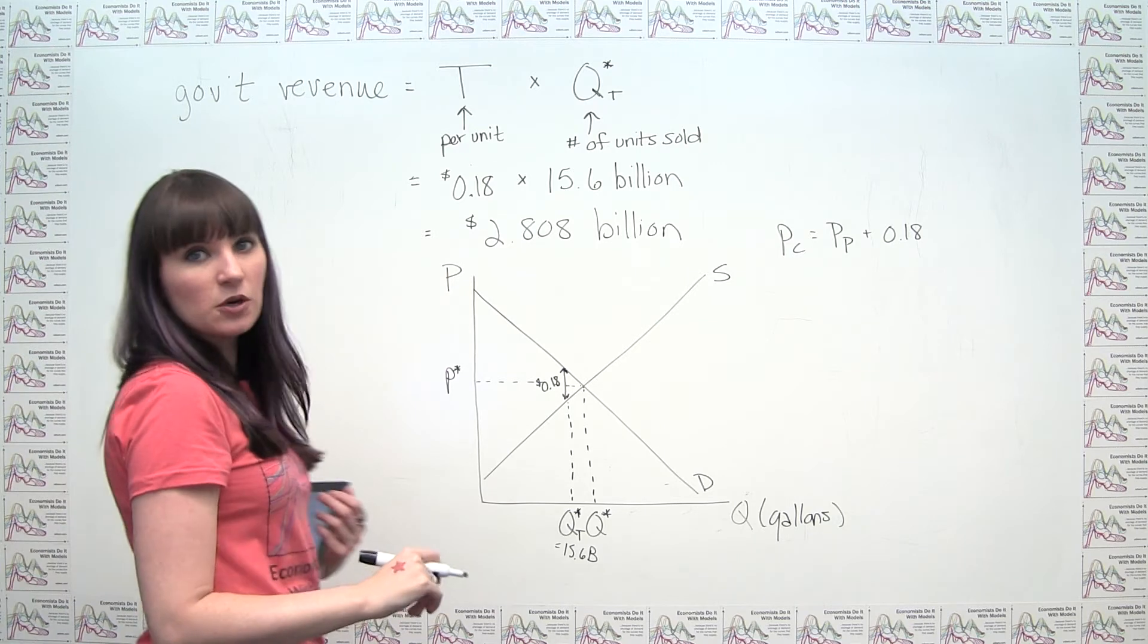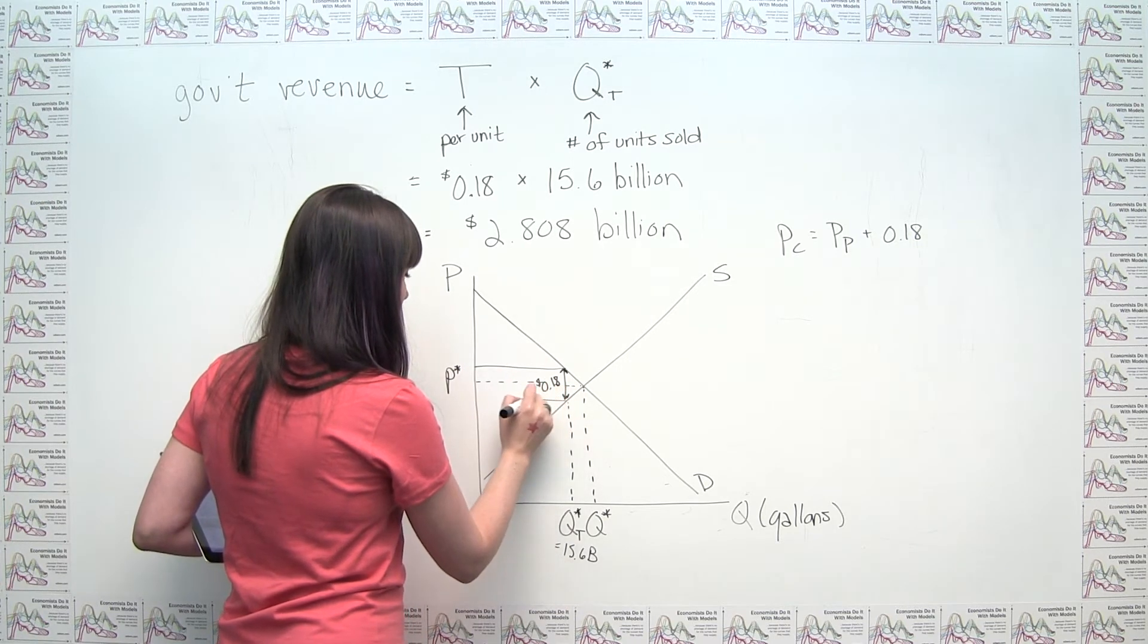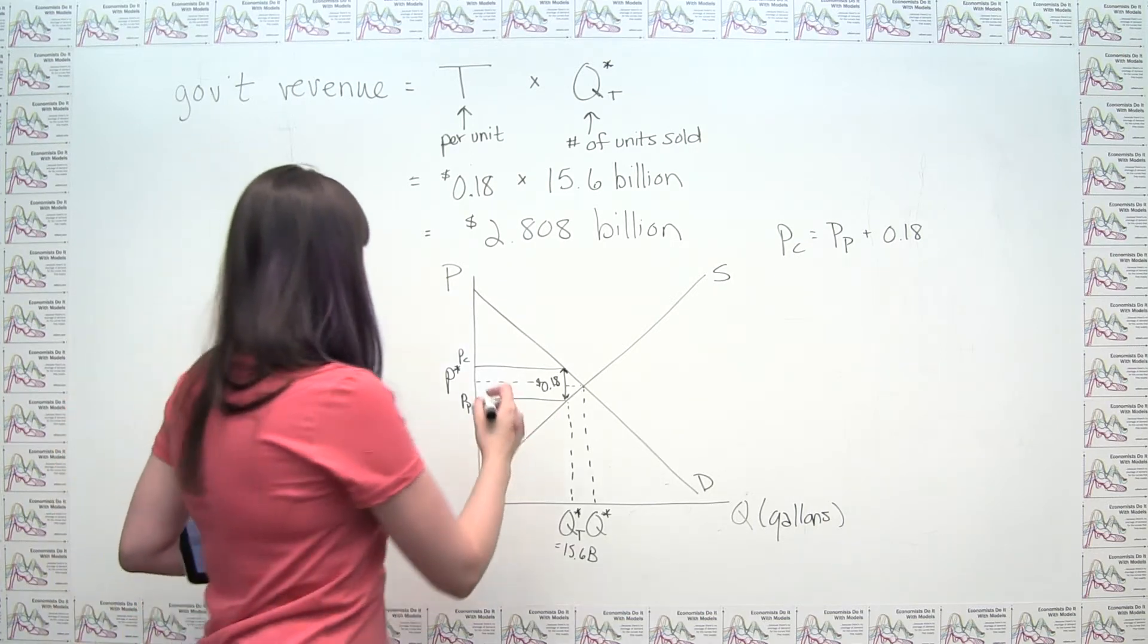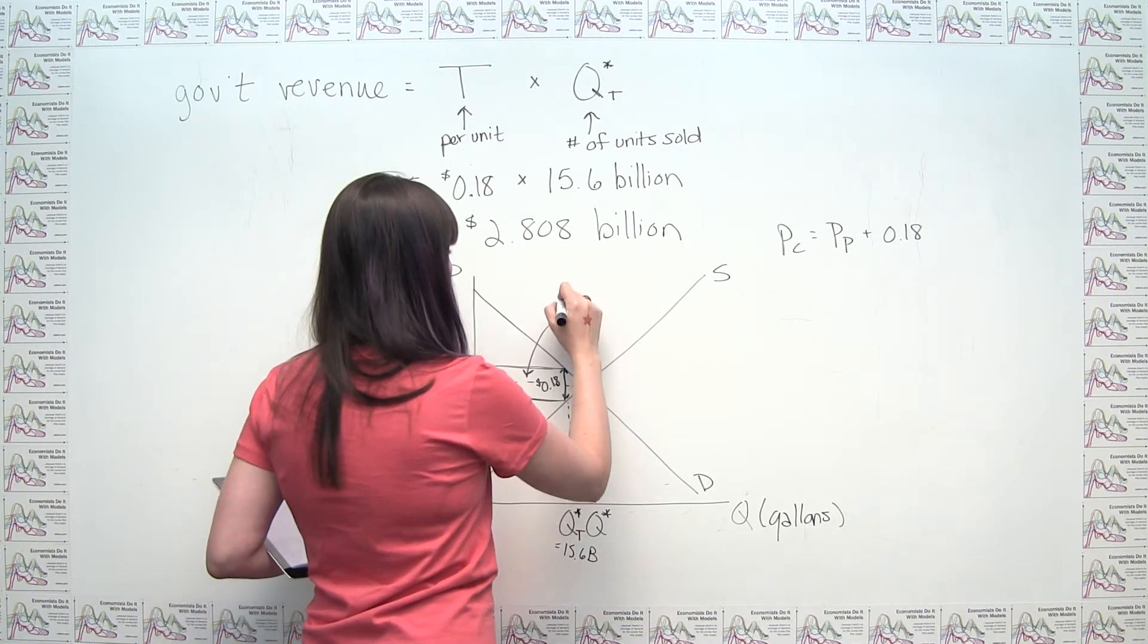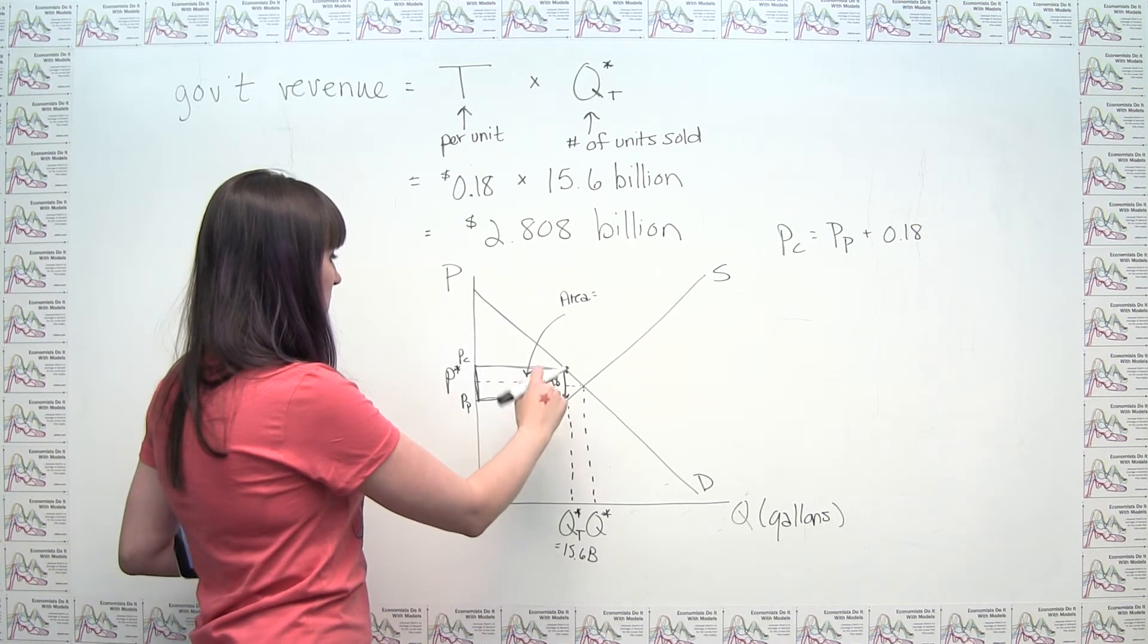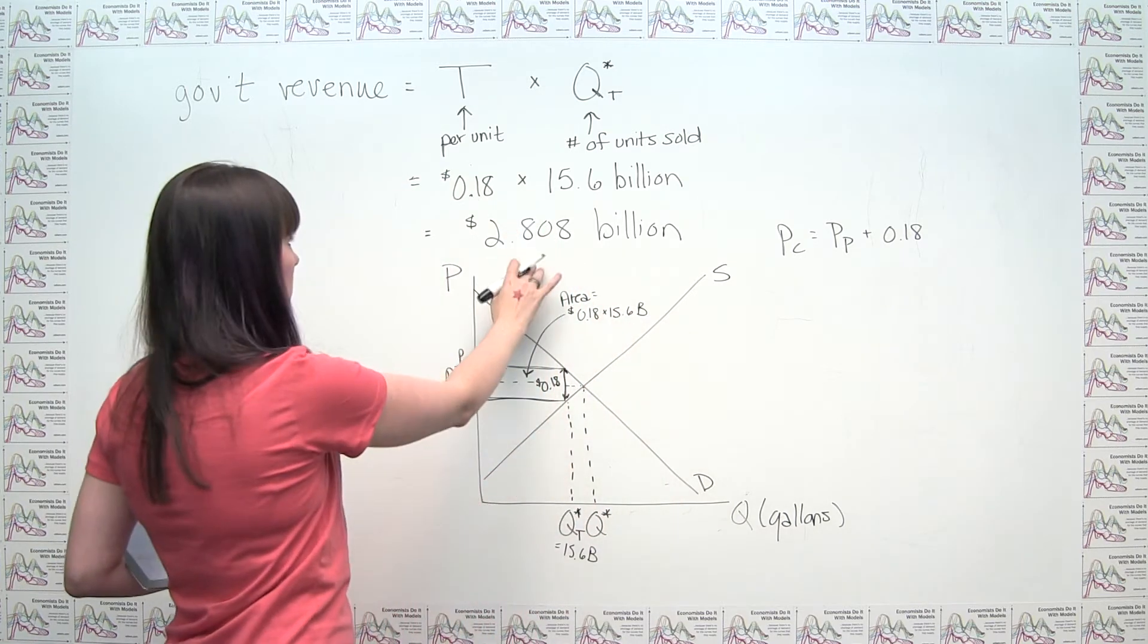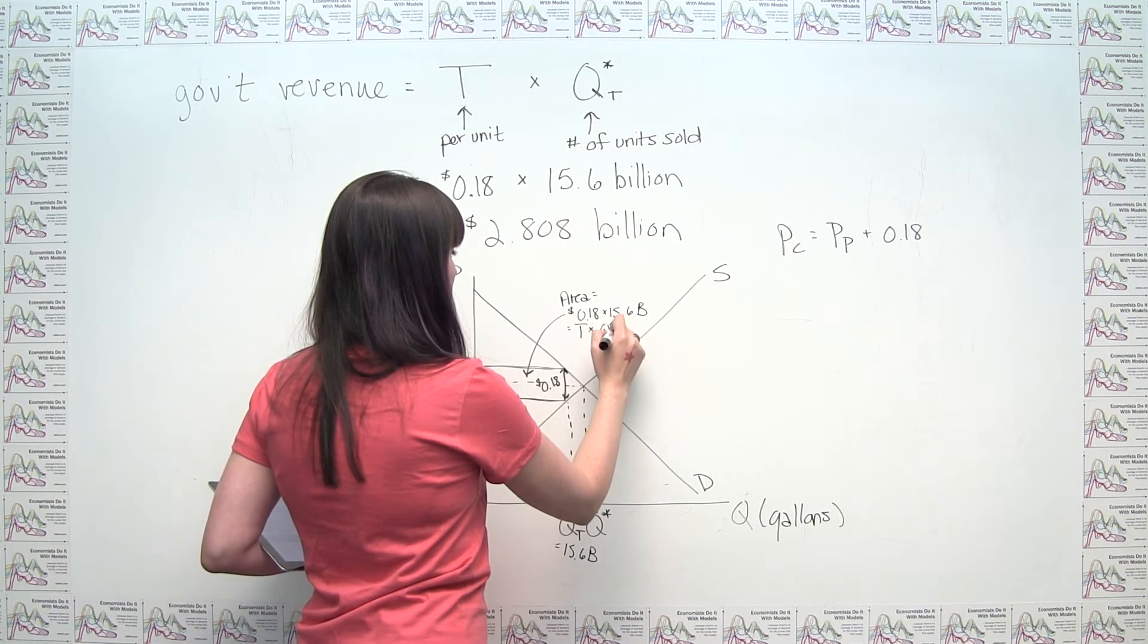And we could see if we wanted to show graphically what our government revenue looks like, we could actually just draw a rectangle like this. And this up here would be the price that the consumer pays. This would be the price that the producer gets net of the tax. And we could say that the area of this rectangle is equal to government revenue simply because the area of a rectangle is length times width. And what we're seeing here is that the area of this rectangle is this $0.18, which is one of the dimensions, times 15.6 billion, which is exactly what we calculated here, because this is, in fact, our t times our q star sub t.